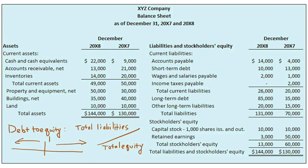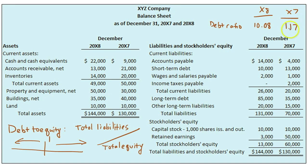Here are XYZ's debt-to-equity ratios: in X8, it is 10.08, and the prior year was only 1.17. XYZ's debt-to-equity ratio significantly increased from 1.17 — where liabilities and equity funded XYZ's assets almost equally — all the way up to 10.08, indicating an almost complete reliance on debt to obtain assets, which is a very high level of leverage.